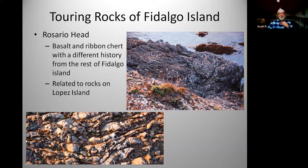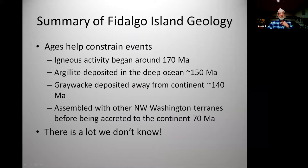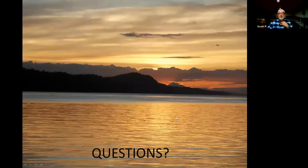In summary, the Fidalgo volcano was fairly short-lived — probably 20 million years or less of active volcanic activity. Then it stopped, all these sediments were deposited, and they were assembled with other terrains — not just from northwest Washington, but maybe from much farther away — and then accreted to the continent about 70 million years ago.